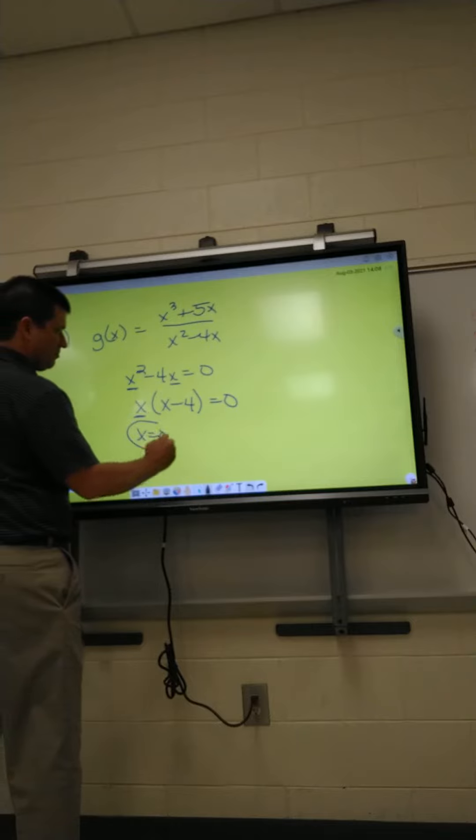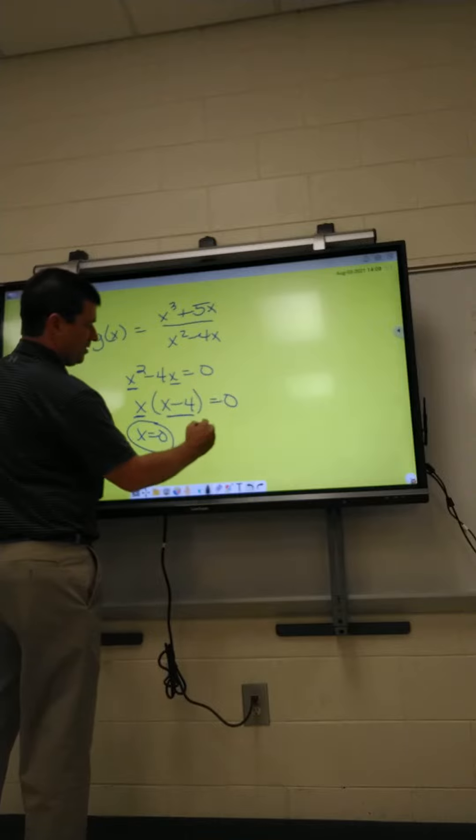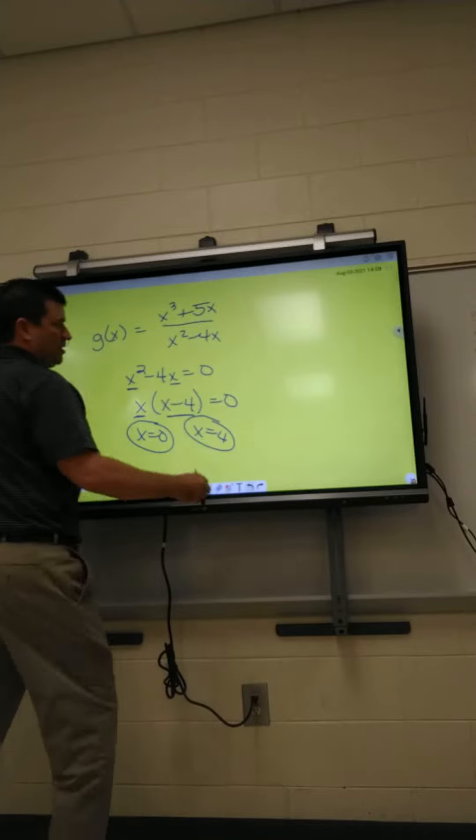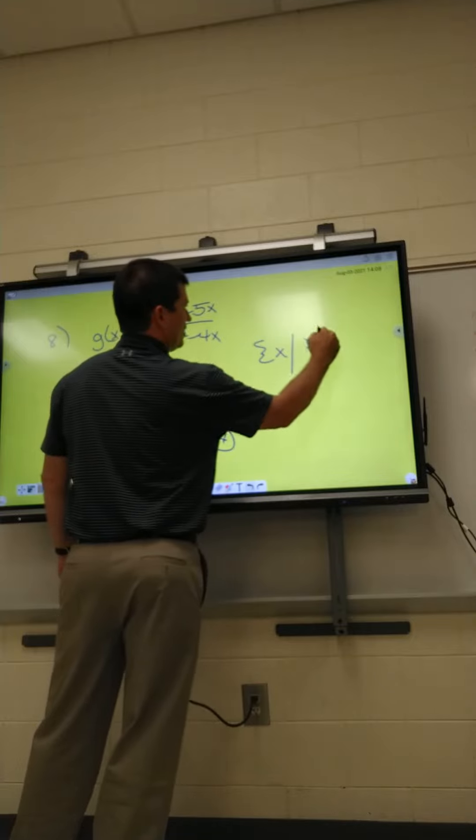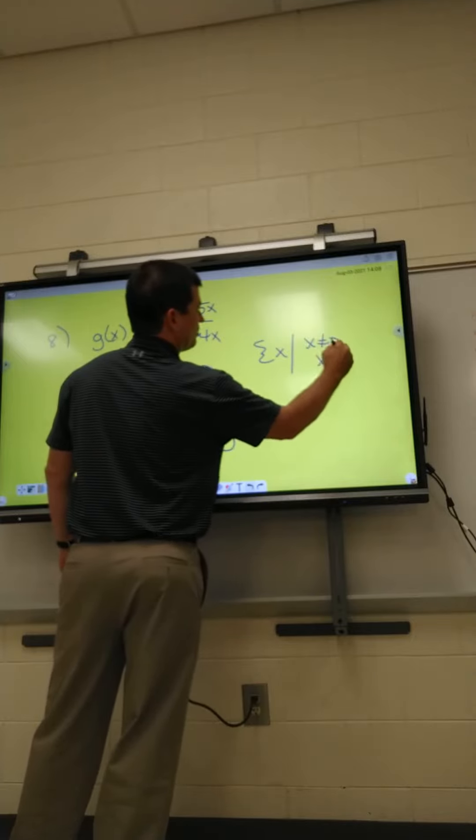This answer is x equals zero. This answer, if I take minus four and move it over, that'll be x equals positive four. So for all my x's, x cannot equal zero and x cannot equal four.